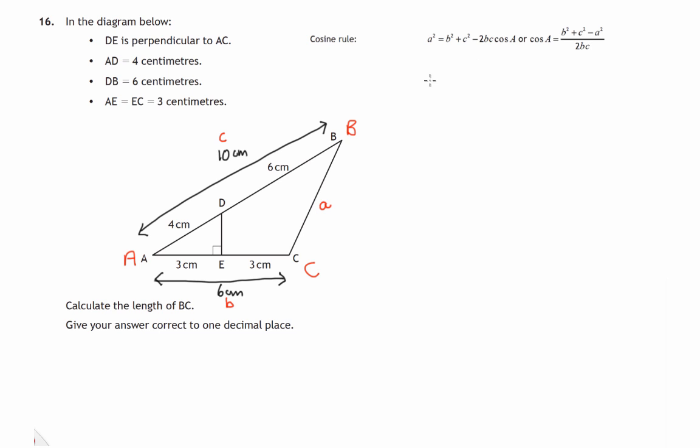I'll put them all in red so we can see them. This formula tells us we can find a² by taking b² which we know, c² which we'll know, minus twice b times c times the cosine of angle A. So we know everything here apart from angle A—that's the one thing we don't know. However, we do know it's in a right angle triangle.